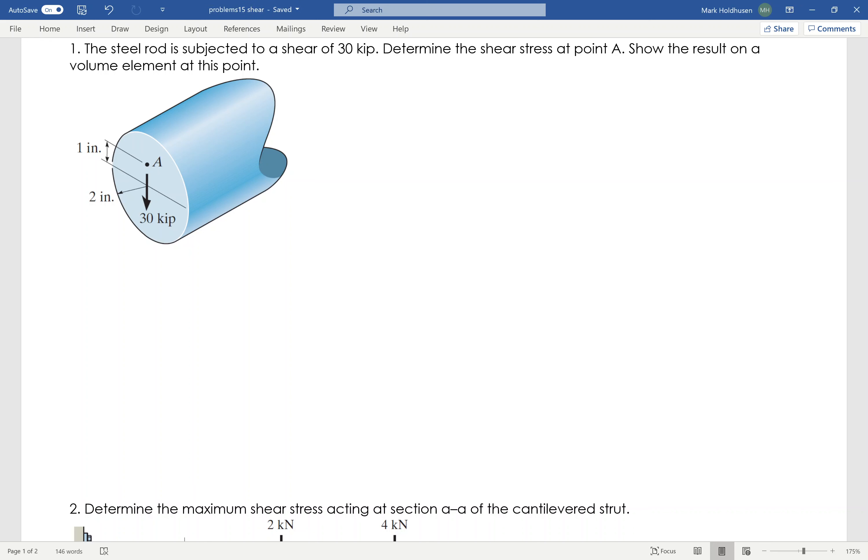All right, so in this problem I need to find the shear stress at point A. Now, in order to do that, what I need to do is use my transverse shear equation, which is going to be tau equals VQ over IT. Now, the tricky one here, kind of the new thing to worry about is Q.